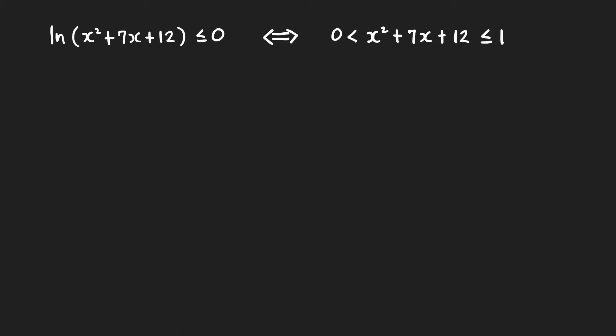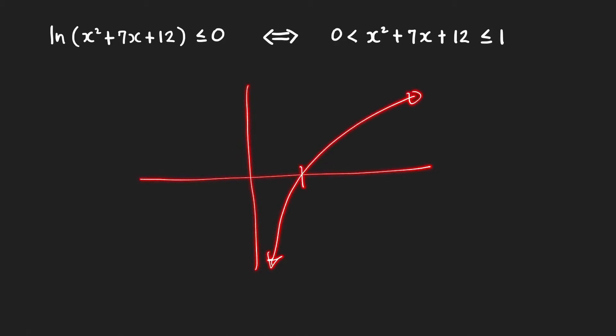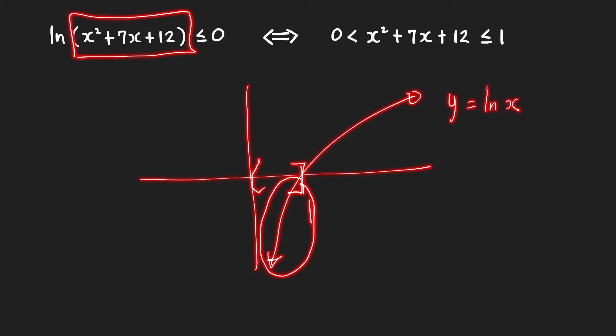To solve this inequality we first write it in a form without the ln. Keep in mind that ln is an increasing function whose graph has the x-intercept at x equals 1. From the graph of y equal to ln x, the value of ln is less than or equal to 0 when the expression inside is greater than 0 and less than or equal to 1.